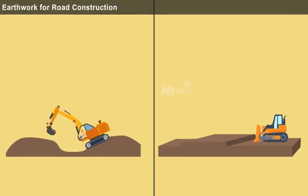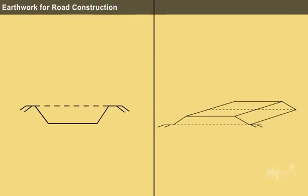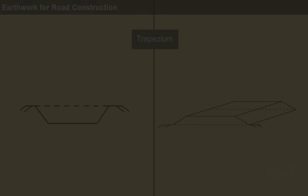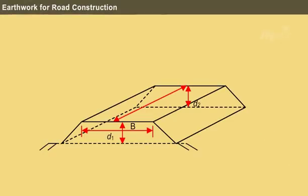Generally, the excavation work of a road's cross-section is in the form of a trapezium. Therefore, the quantity or the volume of the earthwork is equal to the sectional area into length.